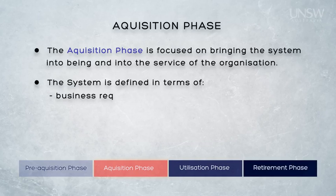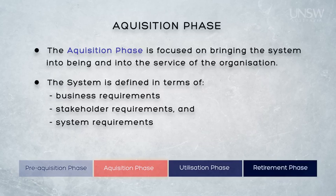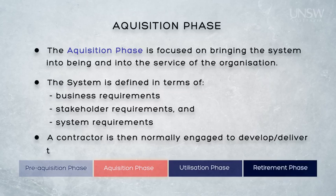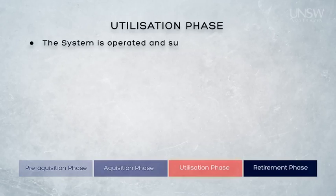Those three artefacts are business requirements, stakeholder requirements, and system requirements. The customer could then go on to develop the system, but most commonly a contractor is engaged to develop the system and then deliver it back to the customer, who introduces it into service in the utilisation phase.